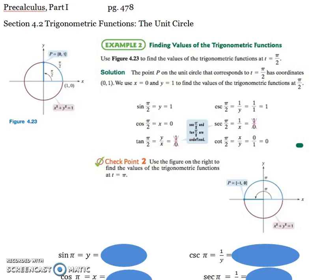This is Pre-Calculus Part 1, Section 4.2, Trig Functions, the Unit Circle, Example 2 on page 478, Finding Values of the Trigonometric Functions.